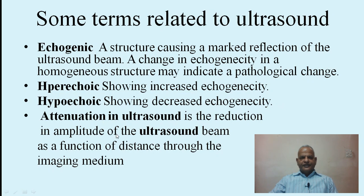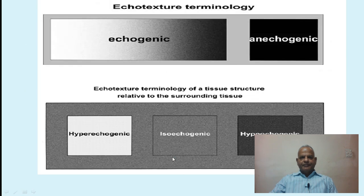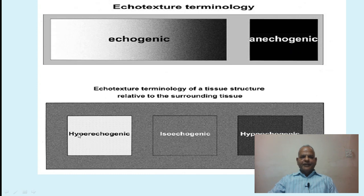Attenuation in ultrasound is the reduction in the amplitude of the ultrasound beam as a function of distance through the imaging medium. A structure that absorbs the ultrasound beam will reflect no ultrasound back and appear black — anechoic. A structure that completely reflects the ultrasound will be hyperechogenic, such as bone. Fluid-filled structures appear anechoic, iso-ecogenic structures partially absorb and partially reflect, and the appearance depends on the tissue interface.